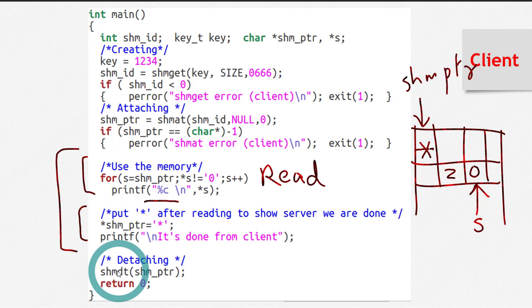Okay. So the last step, the fourth step in the client side programming is shmdt and pointer. So we are detaching in this step and there is no deleting step. So we will just detach. So this is the client side programming code. It is relatively easier than the server side.